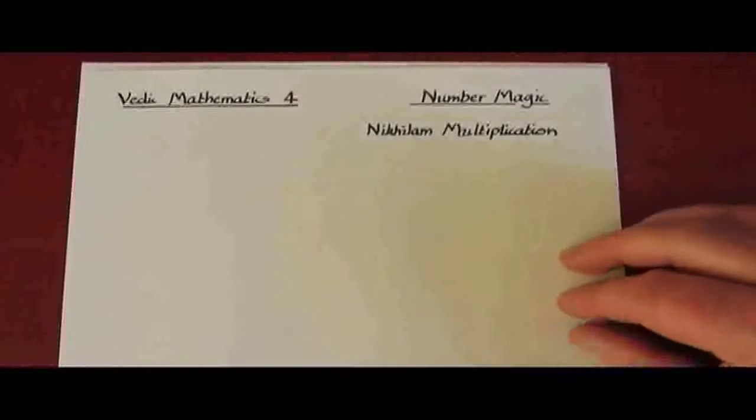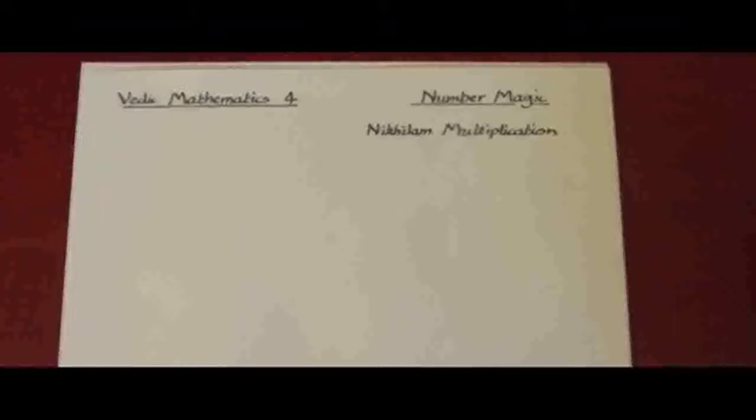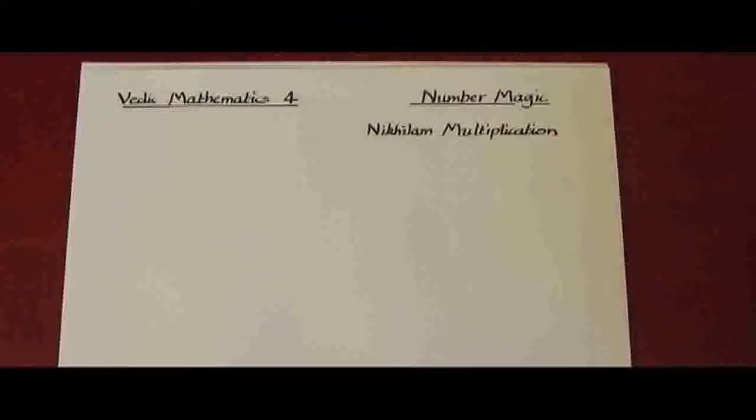In this session we're going to look at one of the Vedic methods for multiplying numbers together called Nikilam multiplication. This is used for multiplying two numbers together which are close to a power of ten such as ten, a hundred, or a thousand.